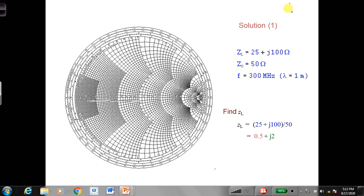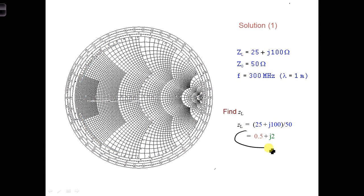First we need to find little zl, so we take zl over z naught. We get 0.5 over j2. We've done this before, and then we need to plot this on the Smith chart.